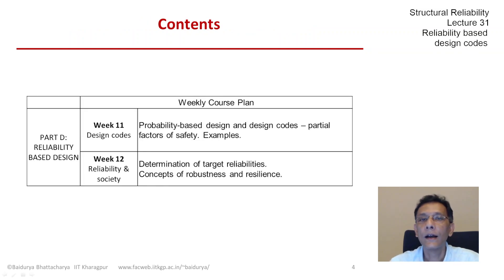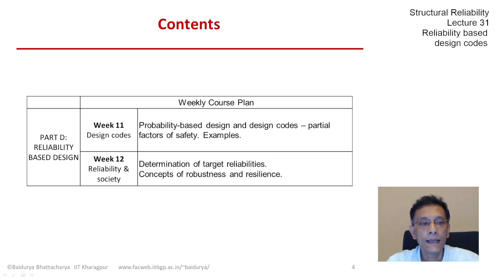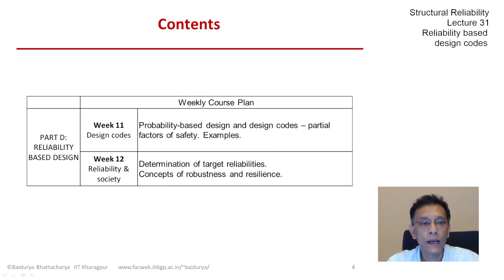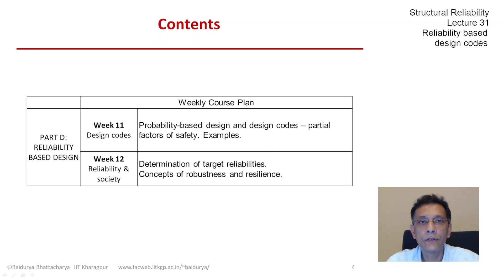We are now in Part D, the last part of our course, where we have six lectures planned. It's called Part D: Reliability Based Design. We would like to discuss the idea of probability-based design and design codes, partial factors of safety or load and resistance factors to be used in design, and work through one or two examples. In the last few lectures, we would like to address the question of how safe is safe enough — how to set target reliabilities and what they should be — and then go a little more towards the interface of engineering reliability and society, because this question of how safe is safe enough is in that domain.